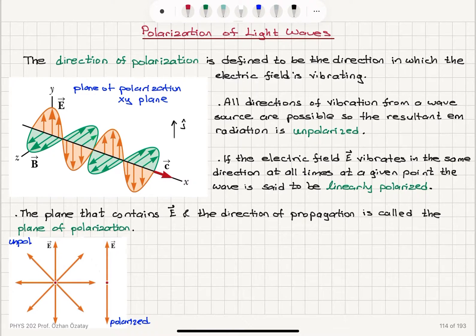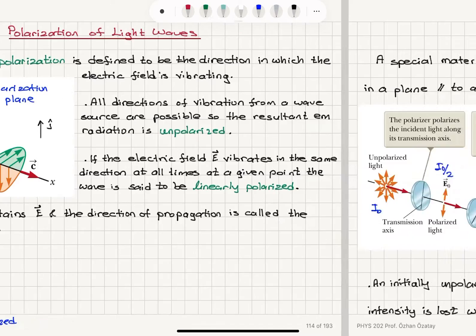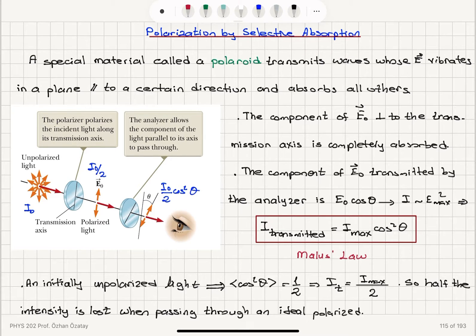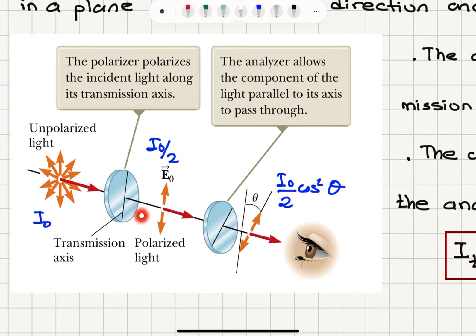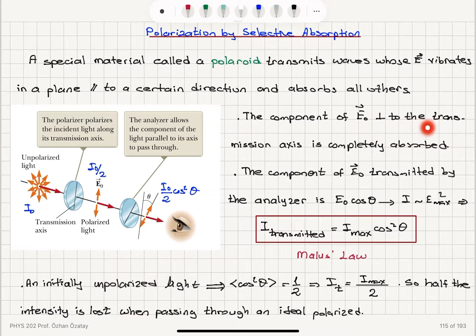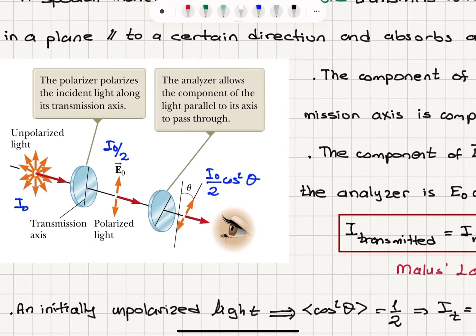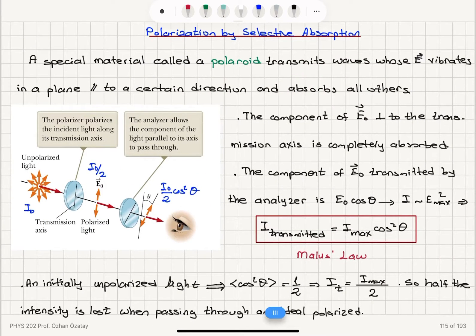There are several ways to polarize an electromagnetic wave; we will discuss the first two in this lecture. The first method is polarization by selective absorption. There is a special material called a polaroid which transmits waves whose electric field vibrates in a plane parallel to a certain direction and absorbs all others. When unpolarized light is incident on this disc made of polaroid material, the polarizer polarizes the incident light along its transmission axis. The component of electric field perpendicular to the transmission axis is completely absorbed, and the component of the electric field is transmitted by the analyzer.